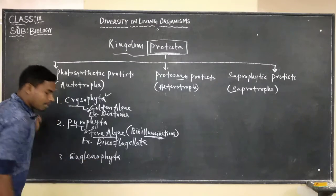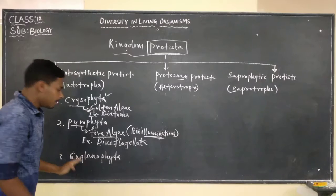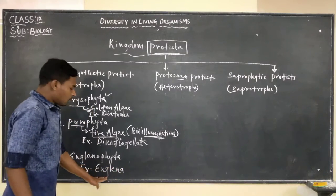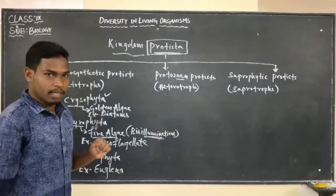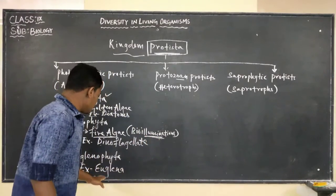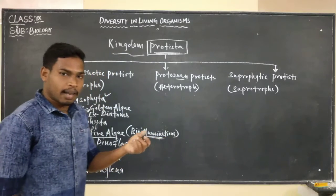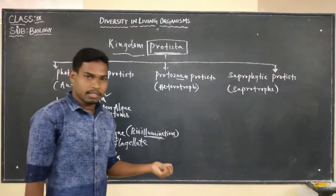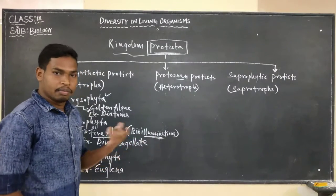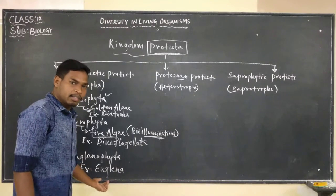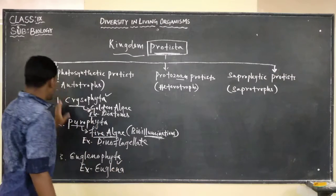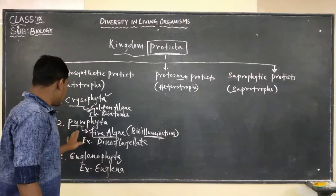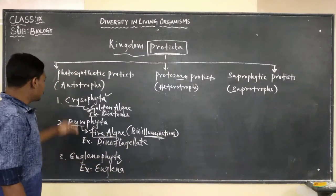The next group is Euglenophyta. By this name you can understand what kind of organisms will be placed under it — they are Euglena. This Euglena becomes a connecting link between plants and animals, because it shows certain characters like plants as well as a few characters like animals. Whenever there is sunlight, they undergo photosynthesis; when there is no sunlight, they engulf food particles. So they have three subgroups: Chrysophyta, Pyrophyta, and Euglenophyta.